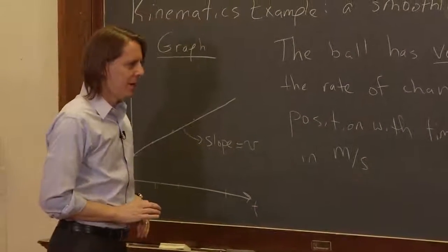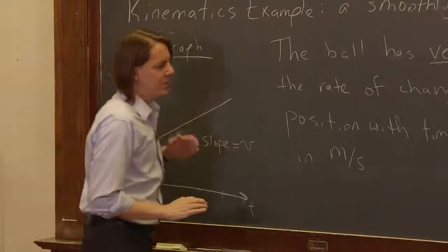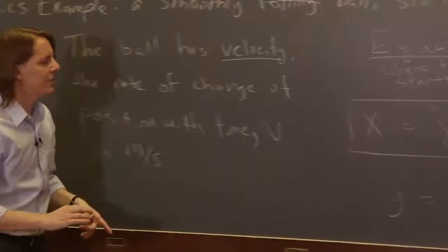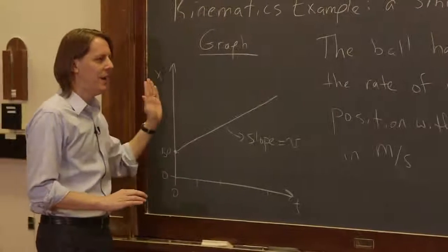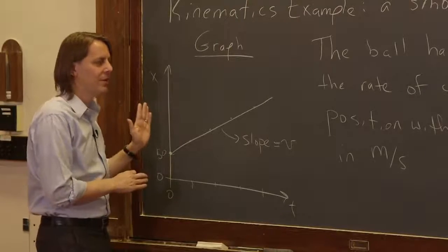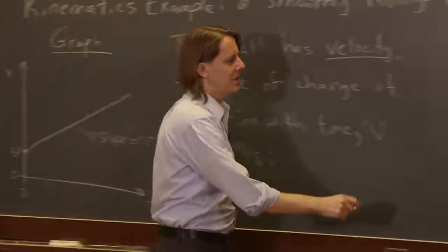Well remember, in physics we don't follow rules about what has to go on this axis and what goes on that axis. We call everything anything we want. So in this case, this is the equation of a line and it does have this form, but you got to remember we're plotting x on the vertical axis.